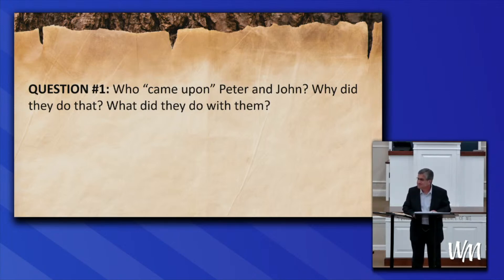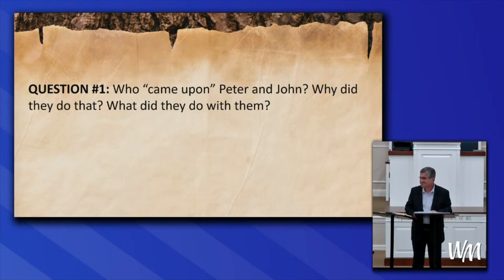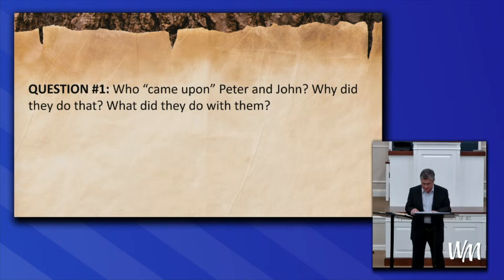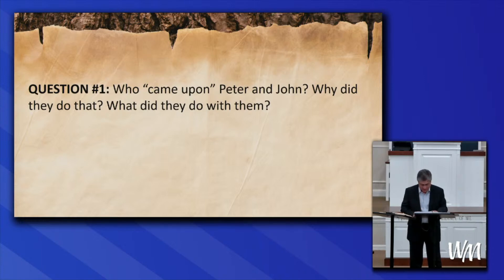Stu points out that after AD 70 and the temple's destruction, the Sadducees essentially disappeared and were never heard from again. Their sect was so centered around the temple — the money changers, the political appointees, the relationship with Rome — that everything they centered their beliefs around was no longer available to them. Peter and John were teaching the resurrection from the dead, which was directly counter to the Sadducees' belief that there is no resurrection.